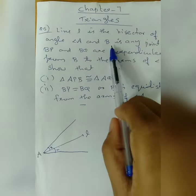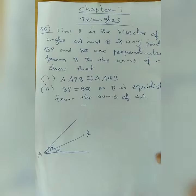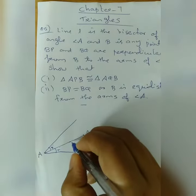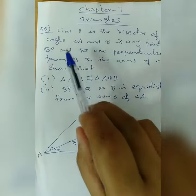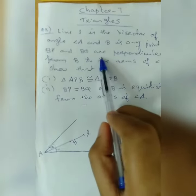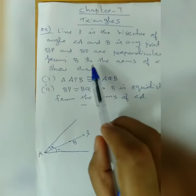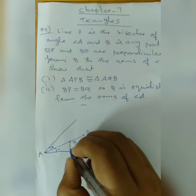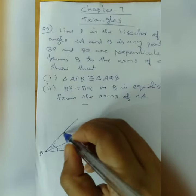B is any point on L. BP and BQ are perpendiculars from B to the arms of angle A. Perpendiculars means each angle is 90 degrees.